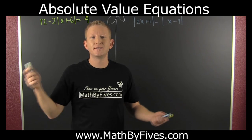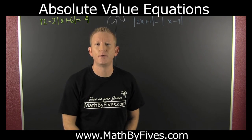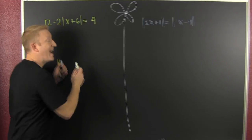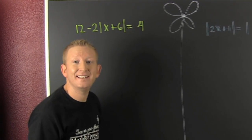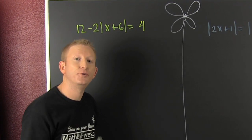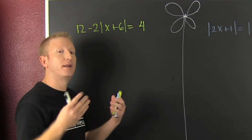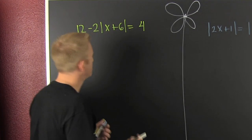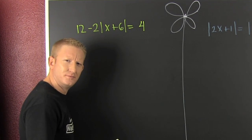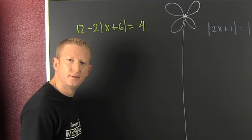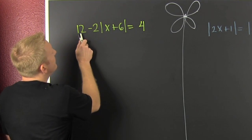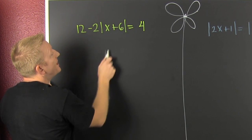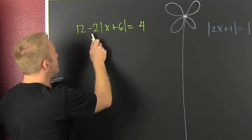Absolute value equations — let's do some harder ones. First up, this one. I need to isolate the absolute value before I apply the two-case rule. Here we see that first we need to get rid of the 12 and then we need to divide by that minus 2.